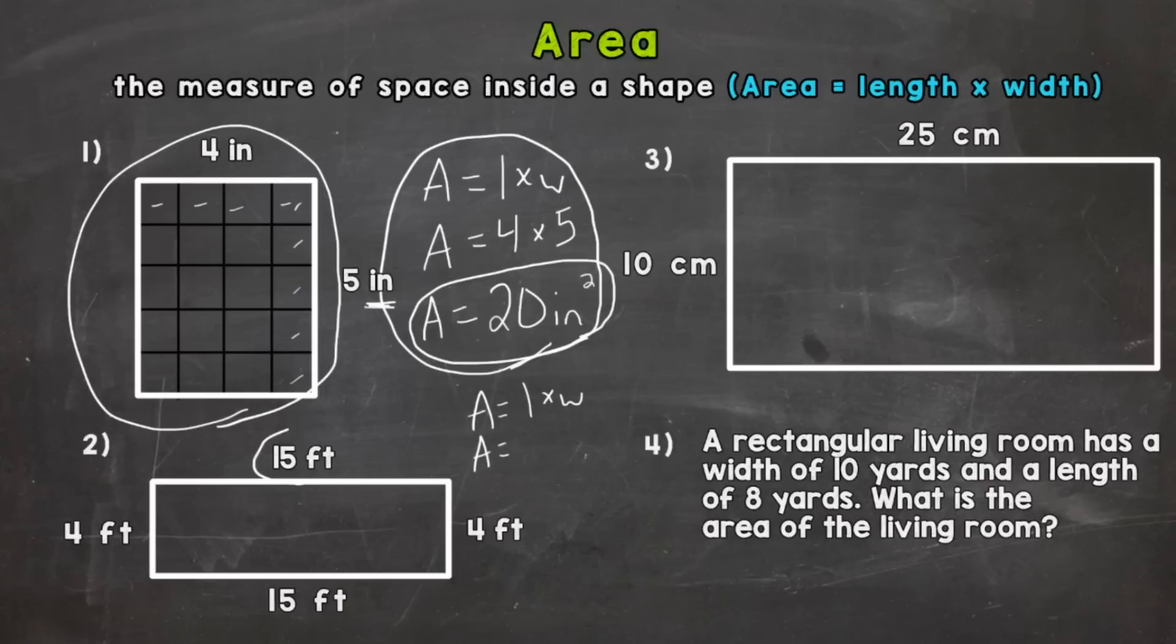I'm going to use 15 feet for the length times 4 feet for the width. 15 times 4 equals 60 square feet. And that's going to be our answer for the area to number two.